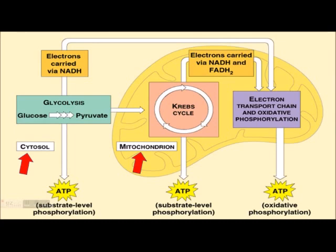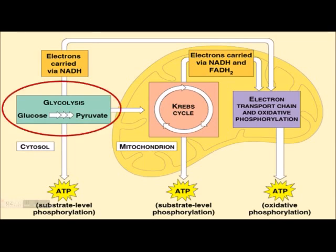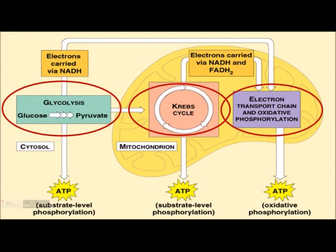This process exists in three stages: the first is glycolysis, the second is the Krebs cycle, and lastly the electron transport chain.